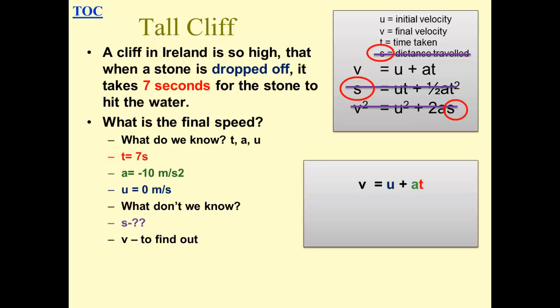So V is the final velocity that we're finding out. U is initial velocity, which is 0 as we know. A is negative 10 and T is equal to 7. So it's negative 70 meters per second. Negative because it's going downwards.